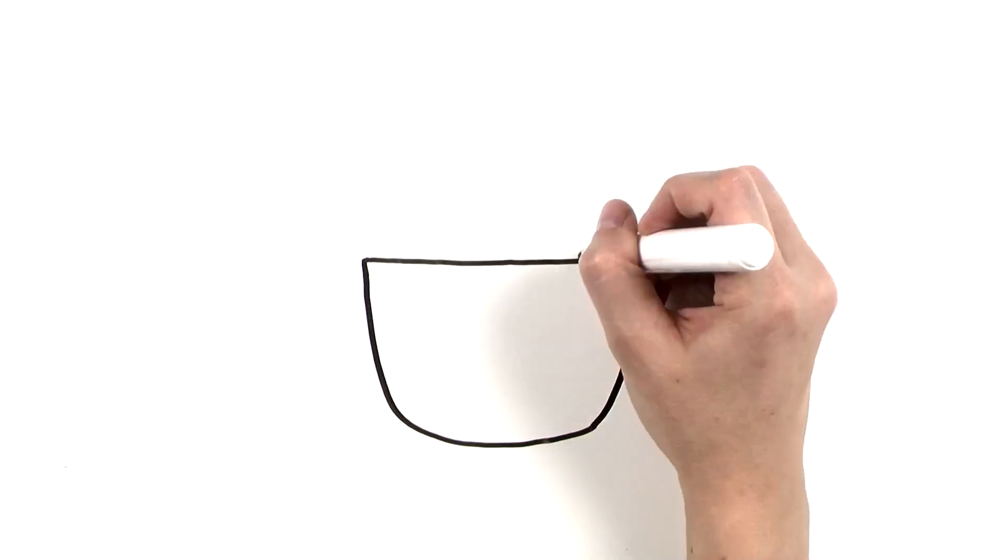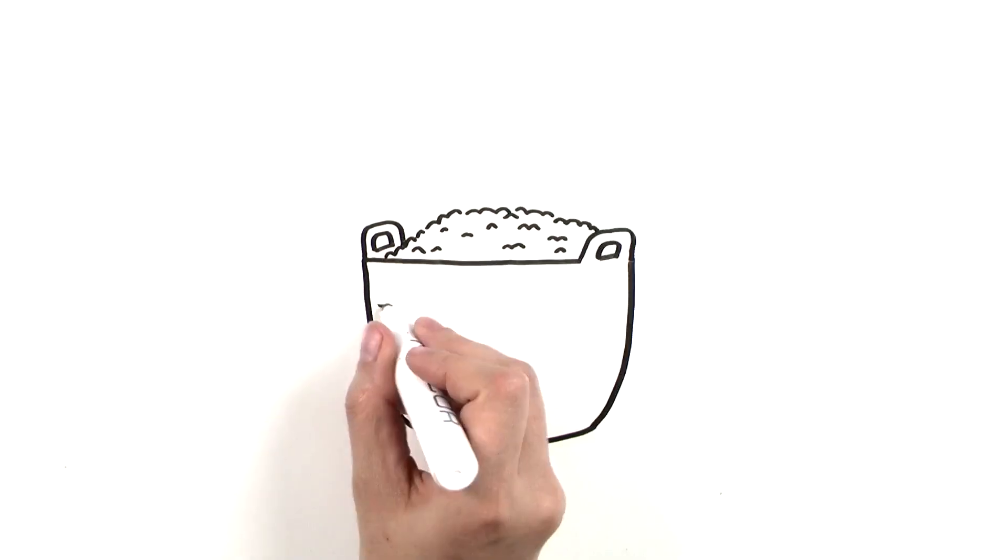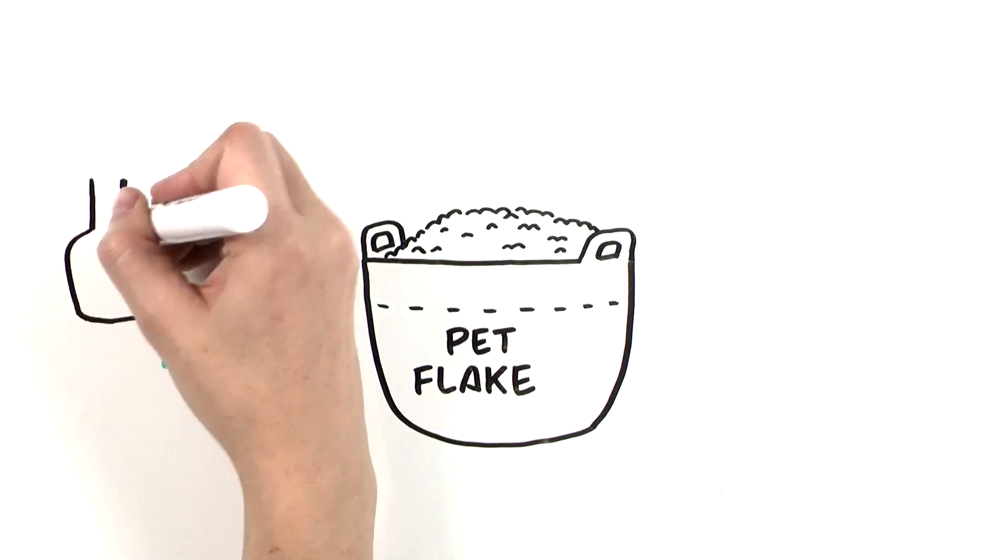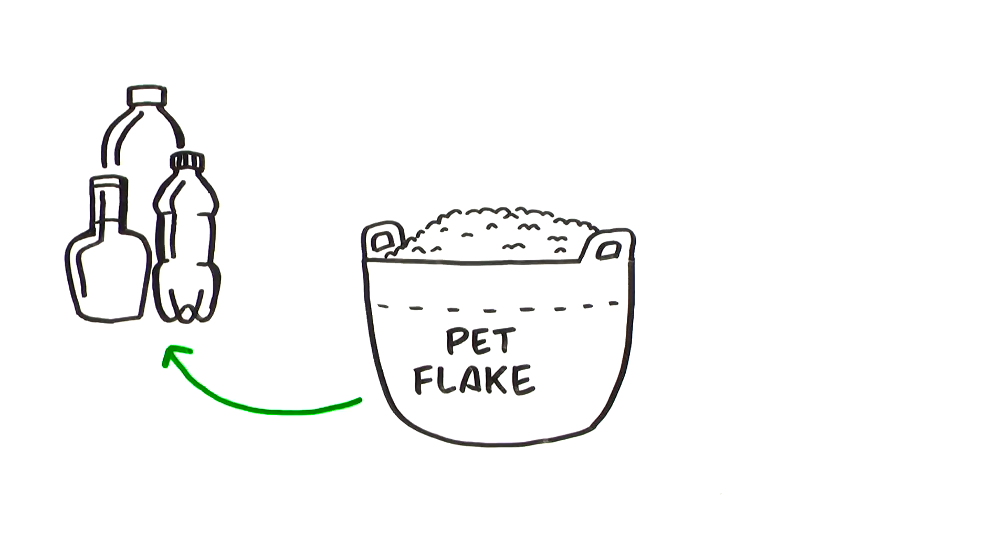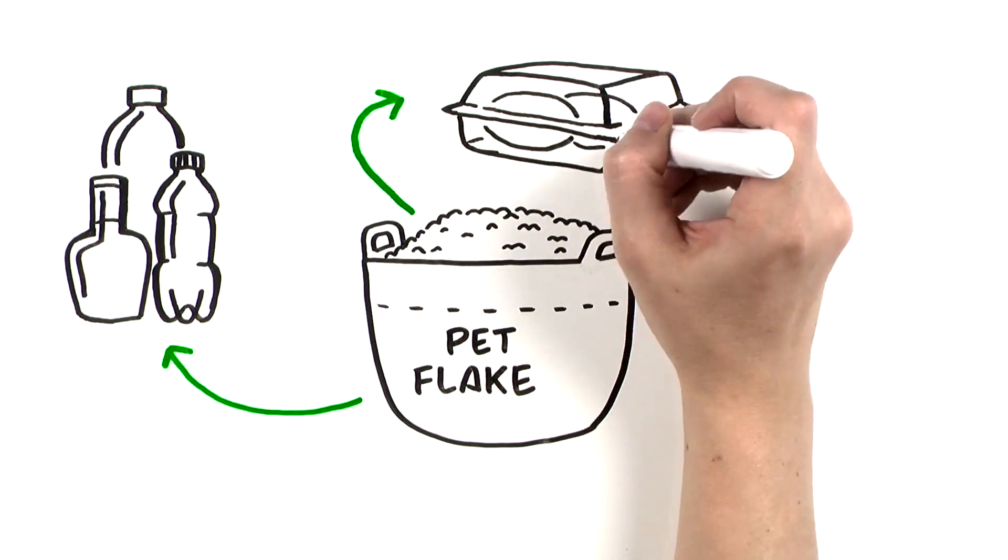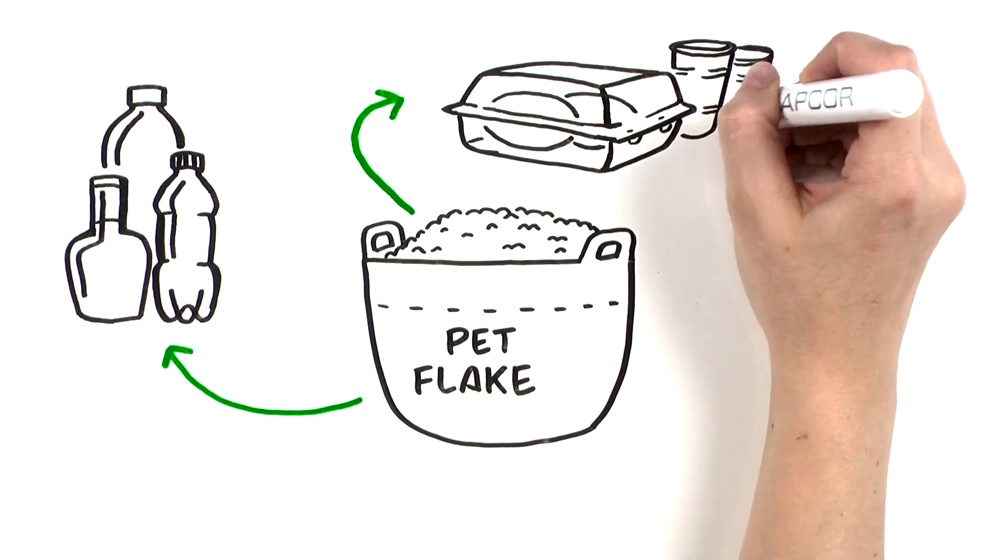Clean recycled PET flake is further processed depending on its intended end market. Where does it go? It may become more highly refined PET pellet for new bottles, or extruded into PET sheet and formed into clamshells, trays, cups, and other thermoformed products.